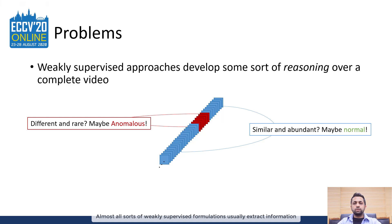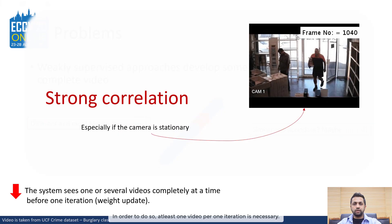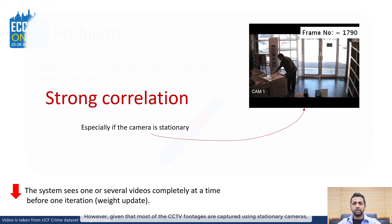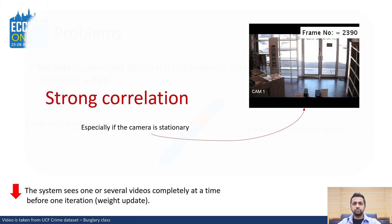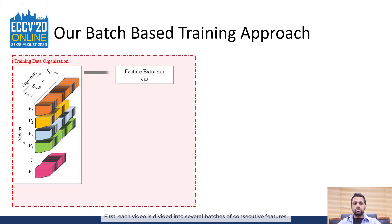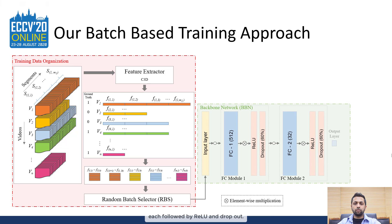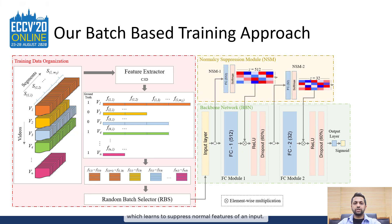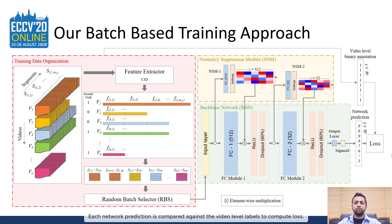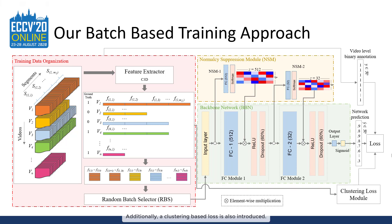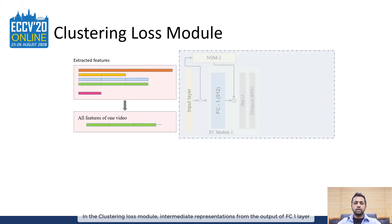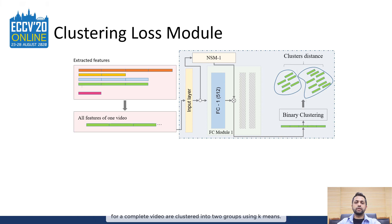Almost all weakly supervised formulations extract information based on some sort of internal reasoning, requiring at least one video per iteration. However, given that most CCTV footages are captured using stationary cameras, this can result in strong data correlation. To mitigate this problem, we propose a batch-based training protocol. Each video is divided into several batches of consecutive features, and a random batch selector retrieves these batches in a random order. A backbone network is created using two FC layers, each followed by ReLU and Dropout. To complement the batch-based training, a normalcy suppression mechanism is devised which learns to suppress normal features of an input. Each network prediction is compared against video-level labels to compute loss. Additionally, a clustering-based loss is also introduced, where intermediate representations from the FC1 layer are clustered into two groups using K-Means.